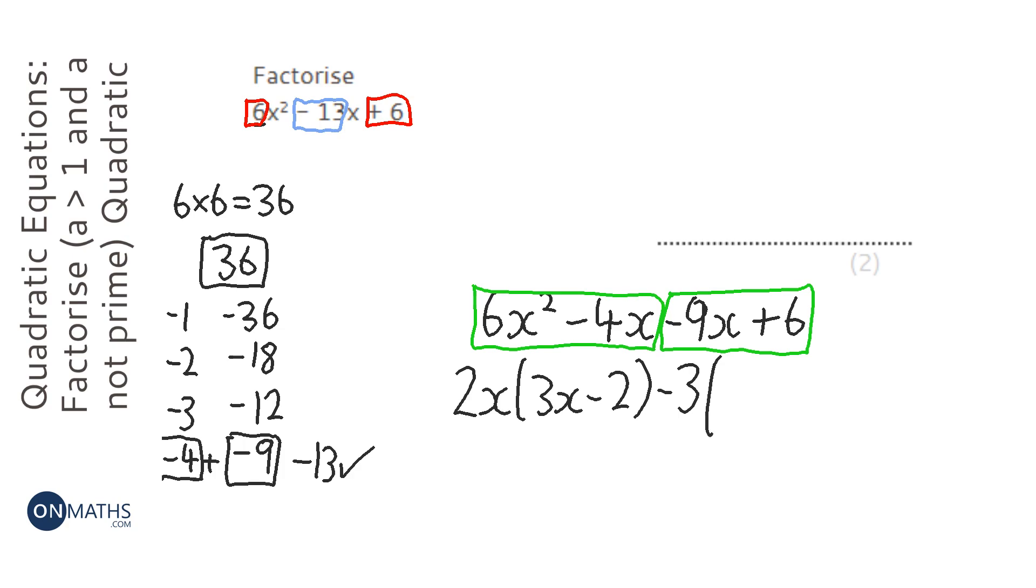So let's have a think. Minus 9 divided by minus 3 is just 3, and then obviously the x. So that becomes a positive. And 6 divided by minus 3 will be minus 2.